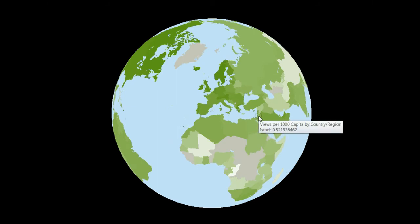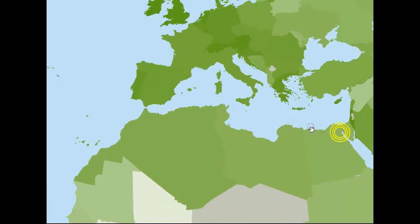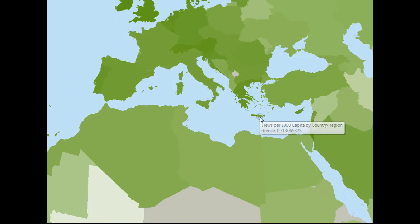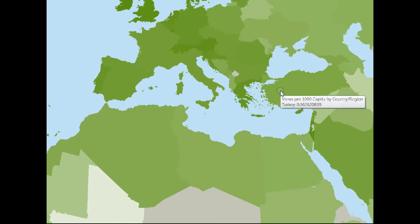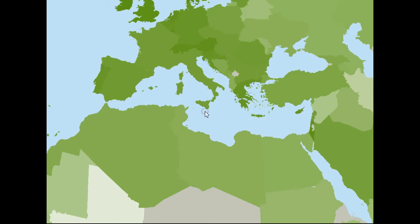Coming in to the smaller countries — here's Israel. Let's zoom in for a closer look. Mediterranean countries: Turkey is 0.06. Here is Cyprus at 0.3 views per 1,000 — that's pretty good. Malta has 0.69 views per 1,000. There's little Malta sitting right there in the middle of the Mediterranean.